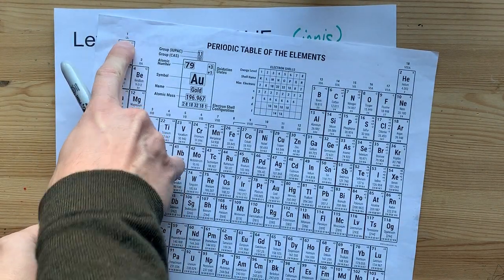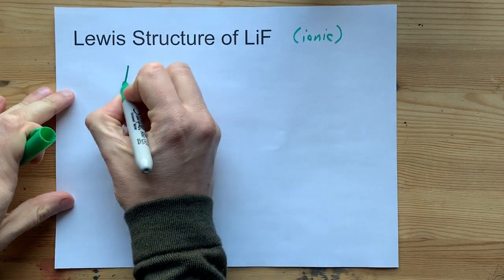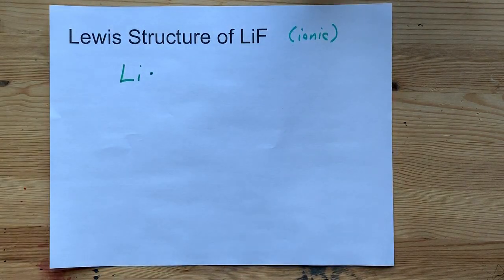Lithium is in the first column and so it has one valence electron. We put one dot around it.